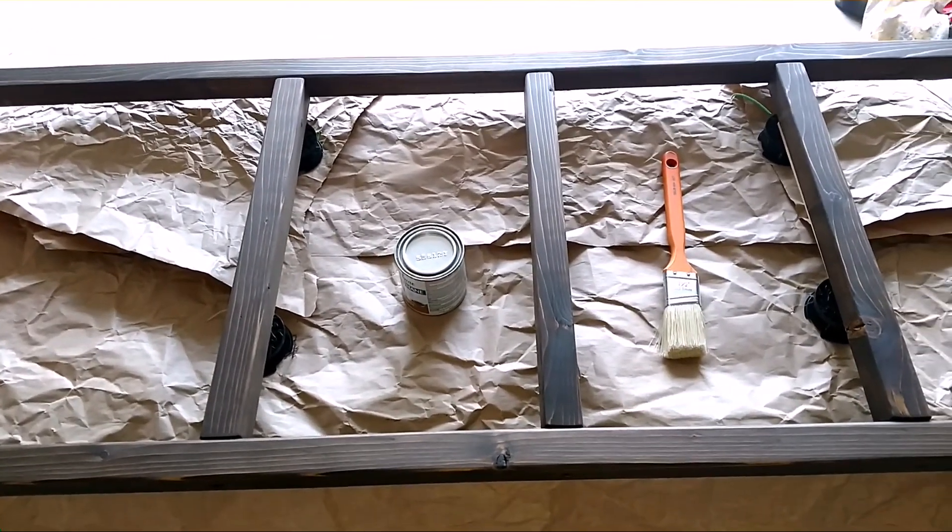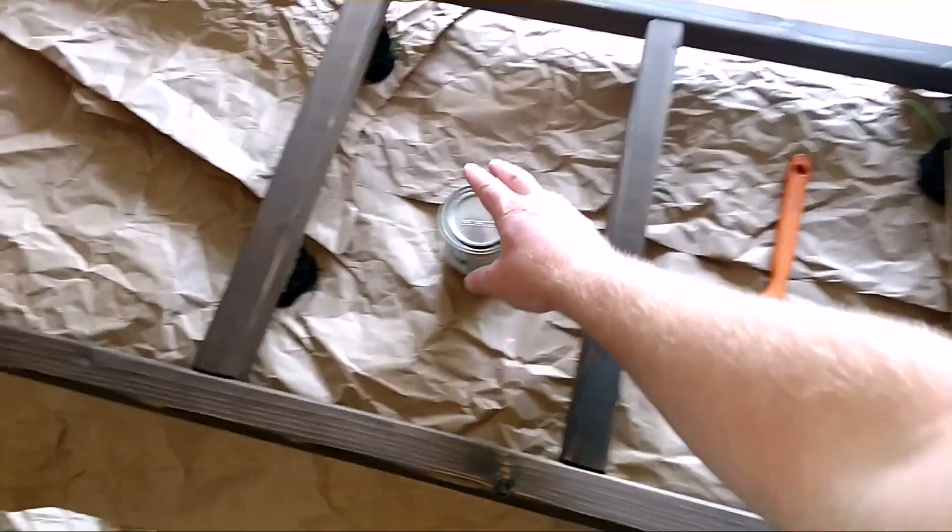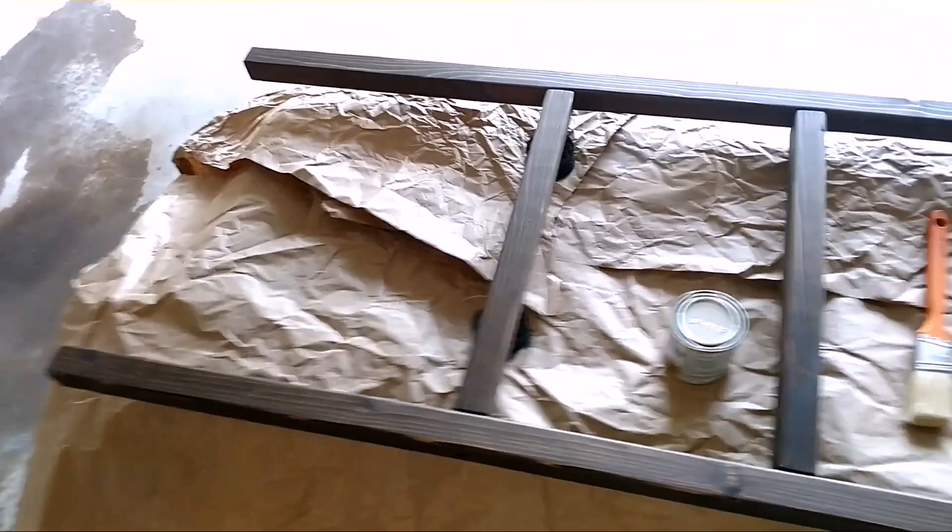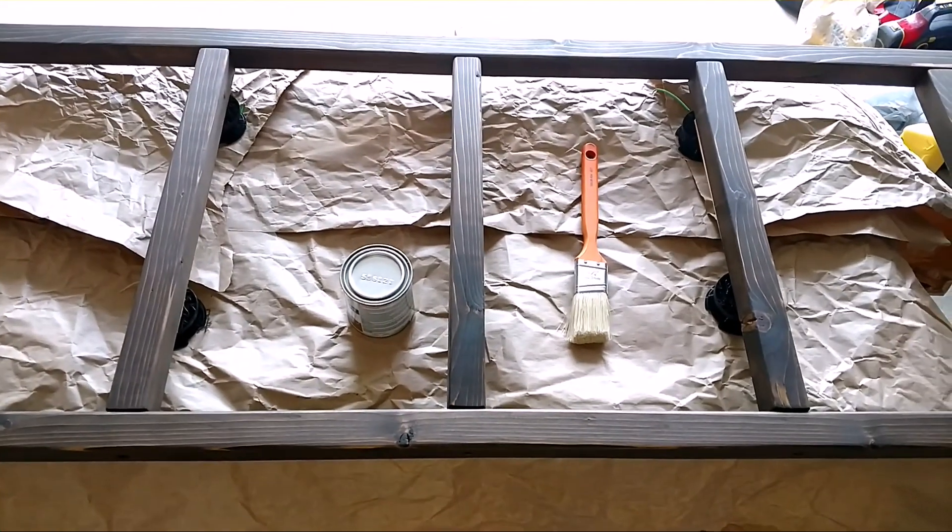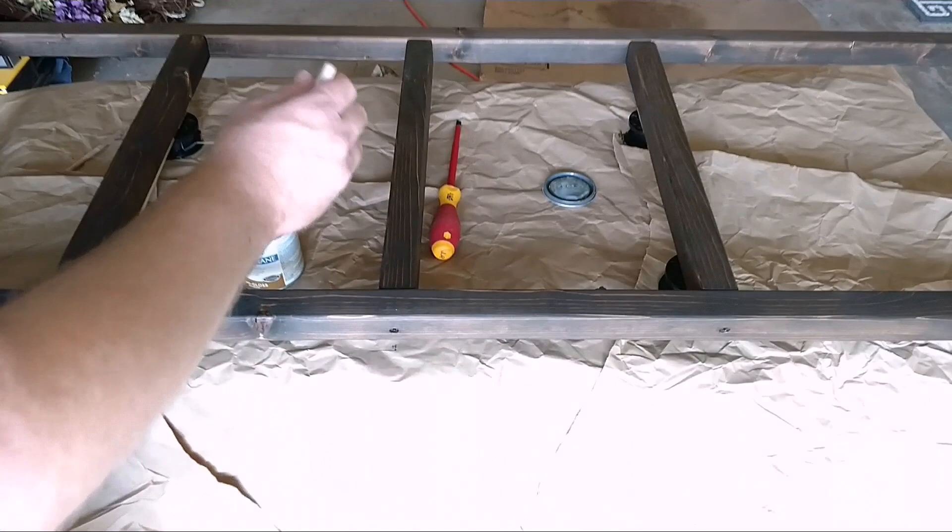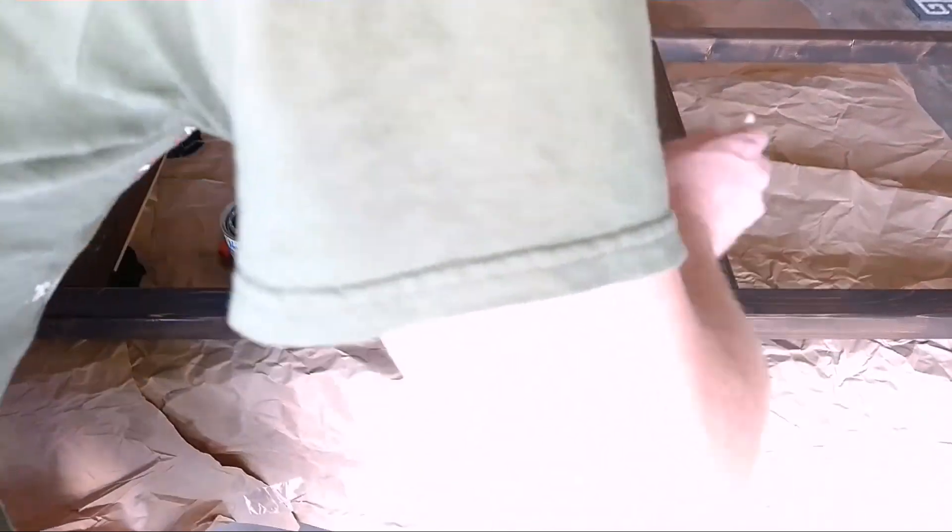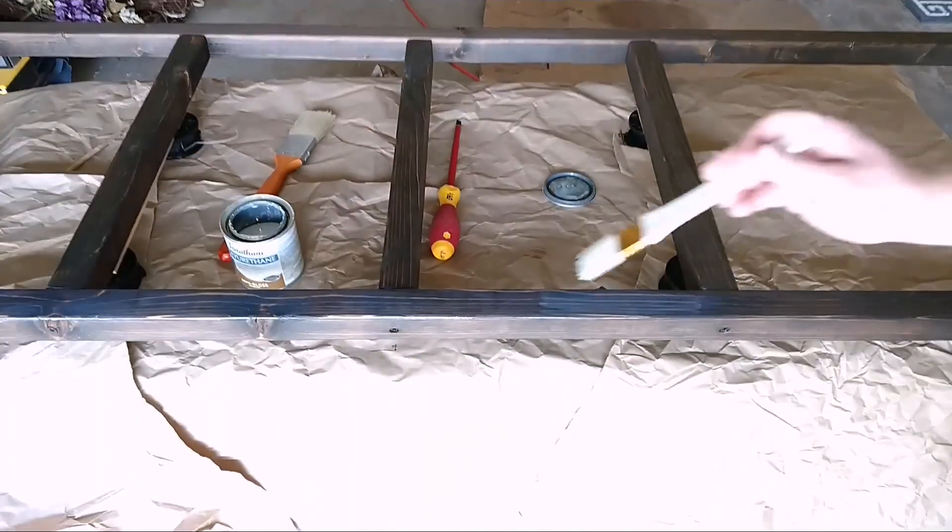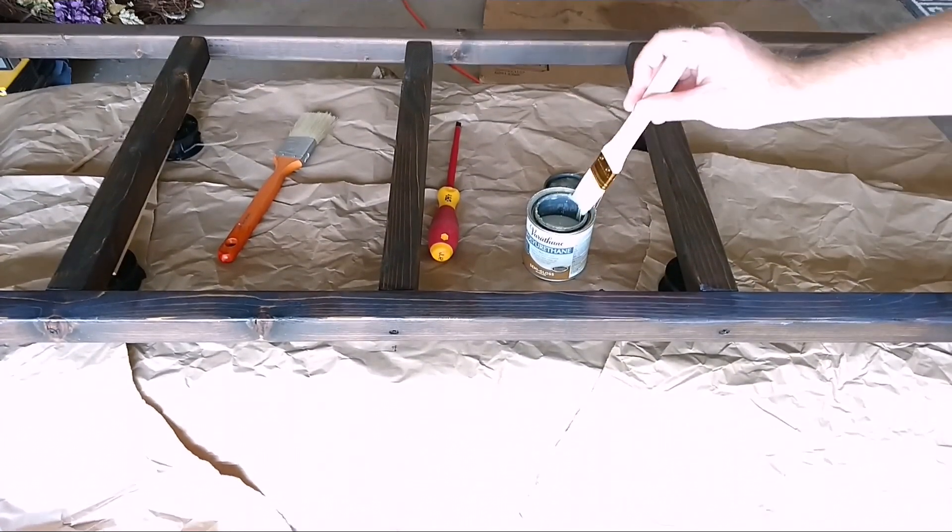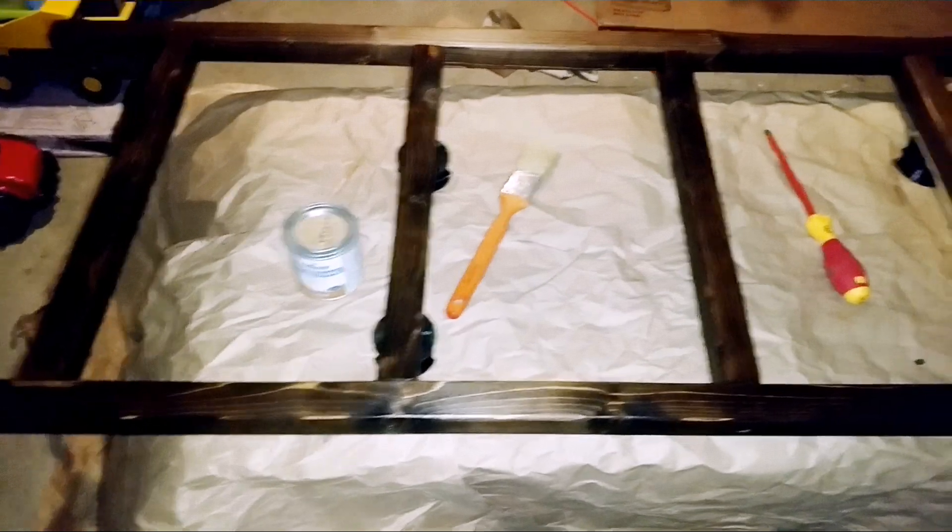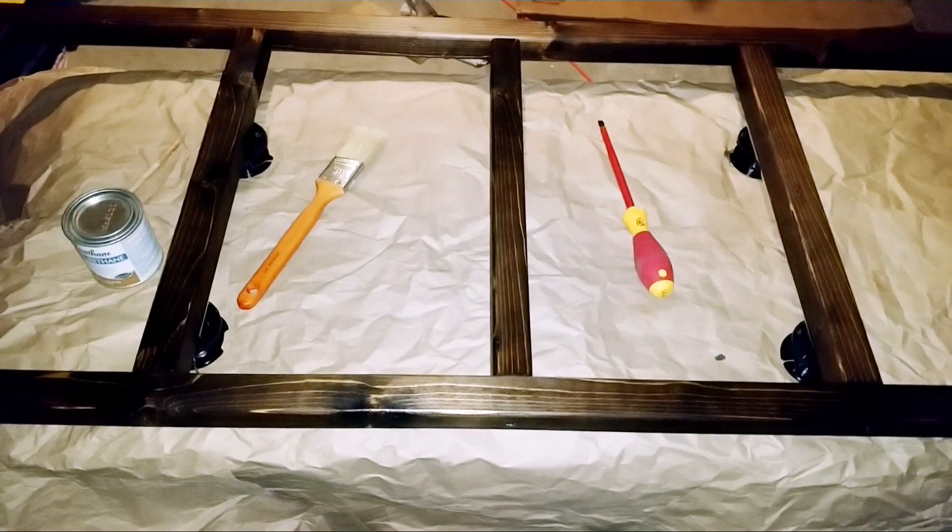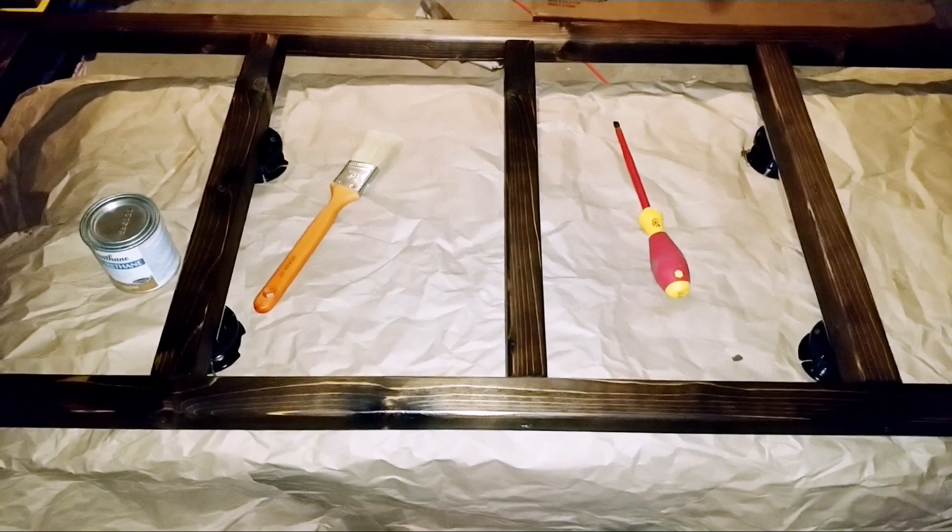Got it all dusted off real good. Got my brush and my polyurethane that I'm going to put on. So I'm going to put a layer on this side, let it dry, flip it over, and then do the other side. This side is dry. I'm going to go ahead and flip it over and put a coat on the other side.